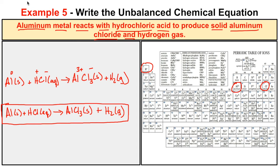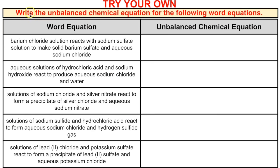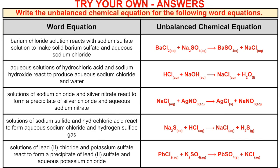Now let's try some on your own. Pause the video — here are five different word equations. Try to write the unbalanced chemical equation for each one before continuing. If you got them all correct, you're doing well at writing unbalanced chemical equations. If you like what you see, click the subscribe button in the bottom right corner, and feel free to leave any comments or questions below. I really hope you found this helpful.